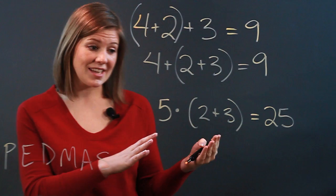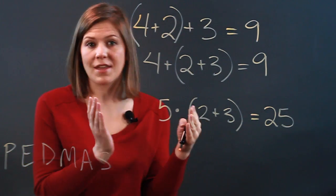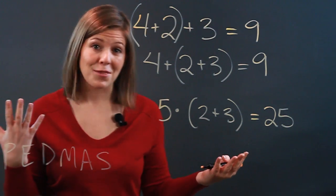If you were to make a mistake and just say, well, 5 times 2, that's 10 plus 3, you'd end up with 13. You'd end up with the wrong answer.